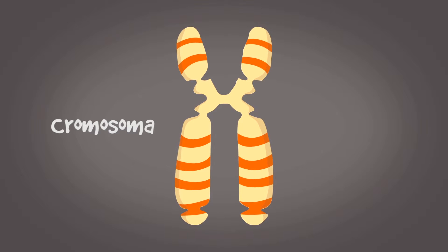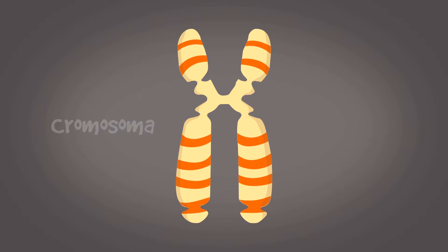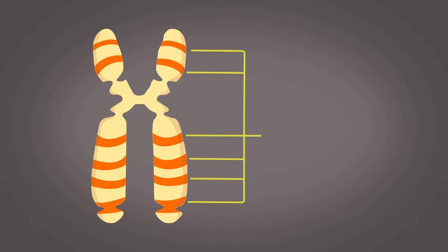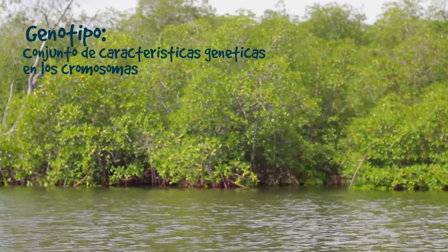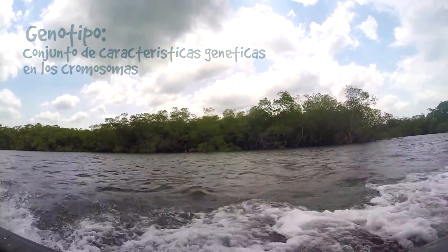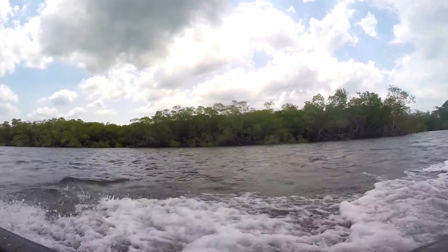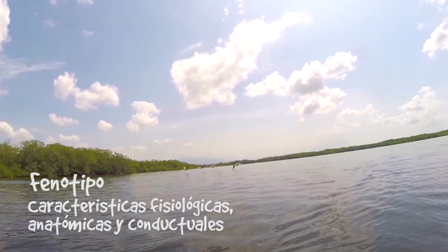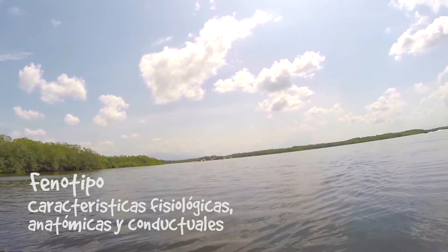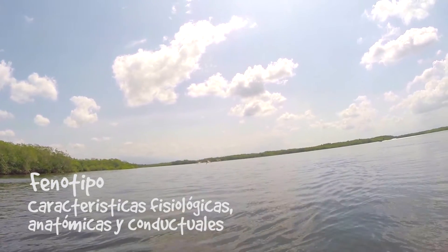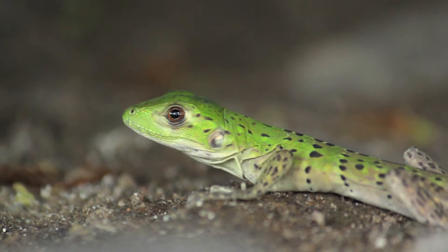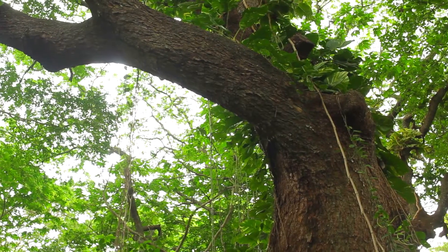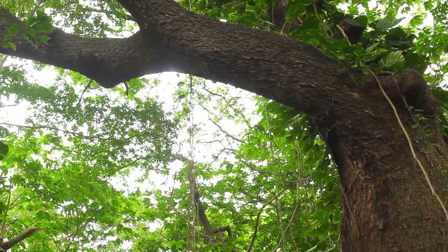Cada alelo se ubica en una región específica del cromosoma llamada locus del gen. El genotipo se refiere a los alelos que posee un individuo, es decir, el conjunto de características genéticas alojadas en los cromosomas. El fenotipo se refiere a la manifestación de características, sean fisiológicas, anatómicas, metabólicas o conductuales. Un fenotipo está dado por un genotipo que se desarrolla en ciertas condiciones específicas.